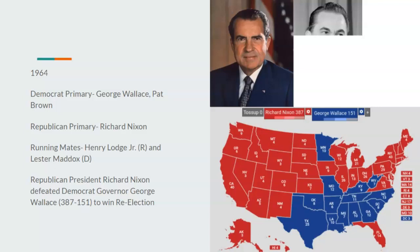Nixon is essentially seen as having delivered for civil rights voters — he gave them the right to vote, ended segregation, and would have passed the poll tax ban amendment during his term. Republican President Richard Nixon defeats Democrat Governor George Wallace 387 to 151 to win re-election. Nixon wins in a landslide over Wallace, who can only win Southern states besides Virginia and Florida, as well as Minnesota and D.C.